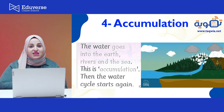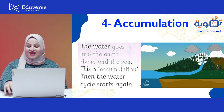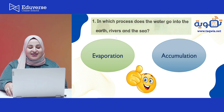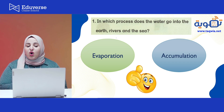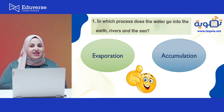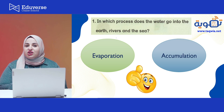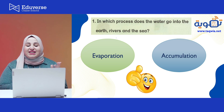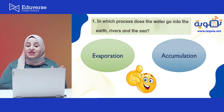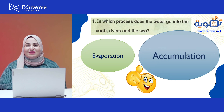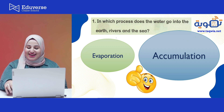Let's review together. First question: in which process does the water go into the earth, rivers, and the sea? Is it evaporation or accumulation? Of course, this is the accumulation stage. Excellent, I'm so proud of you!